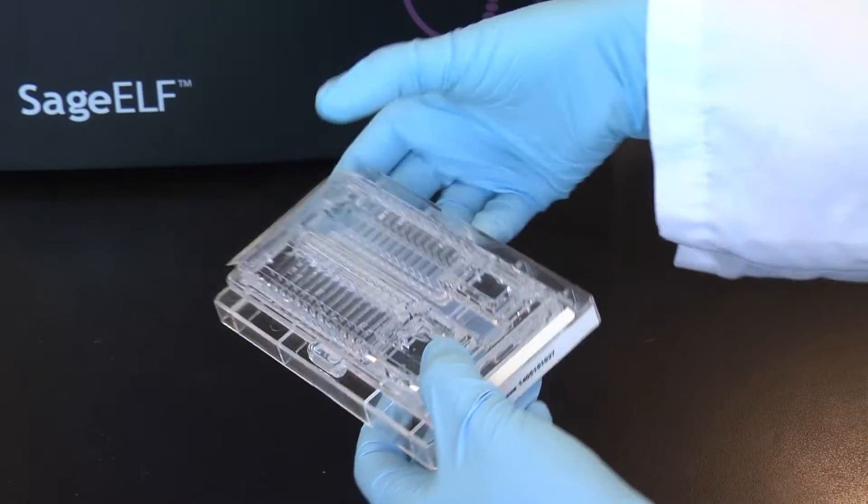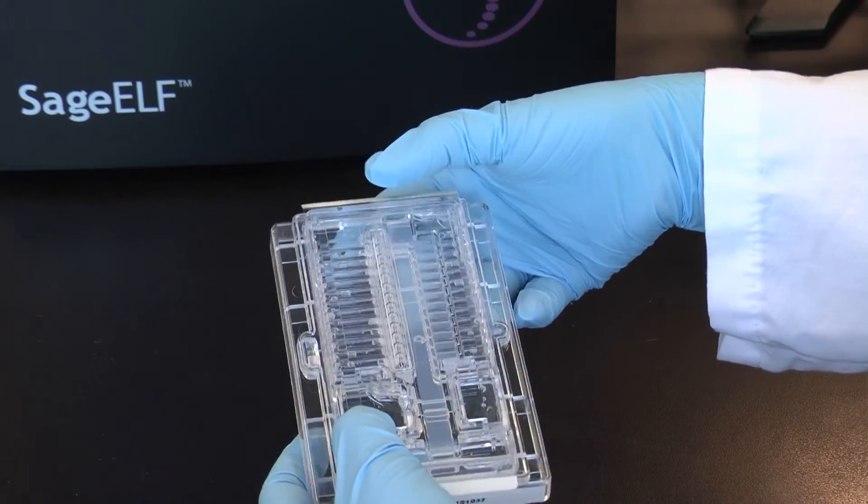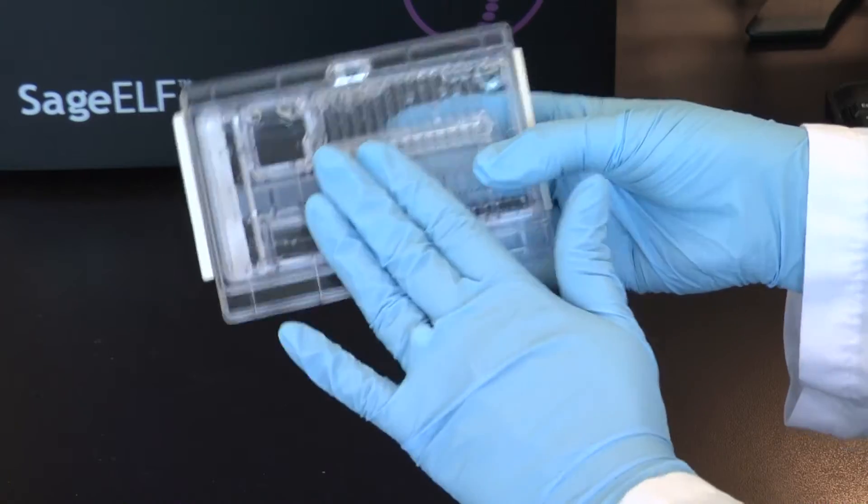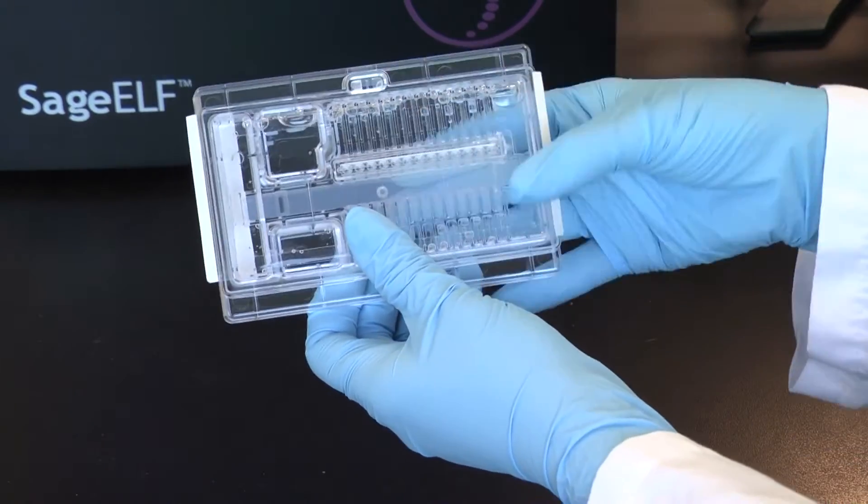Make sure there are no bubbles beneath the end of the separation gel column. Continue to rotate the cassette, and then tap to remove bubbles from behind the elution wells.